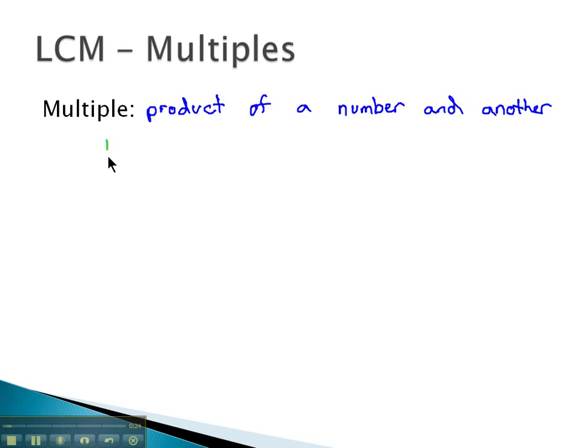For example, we would say 12 is a multiple of 3 because it's a product of 3 and something else. Turns out it's 3 times 4.